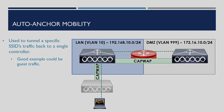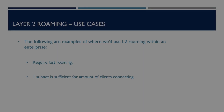Finally, the last method of roaming we can use is known as auto-anchor. This method of roaming is used when we want to anchor traffic from an SSID to a particular controller within our mobility domain. For example, take our guest SSID — we may decide for security reasons we don't want any of the traffic touching our network. Instead, what we might do is CAPWAP this traffic back to a controller located in a DMZ network and pump this traffic straight out to the internet, as shown in the example.